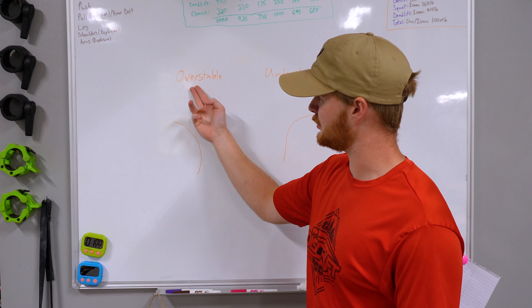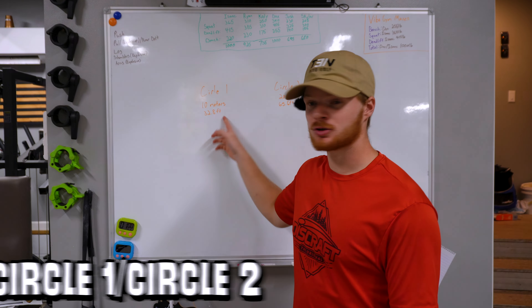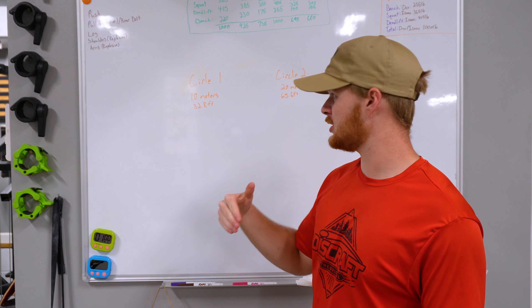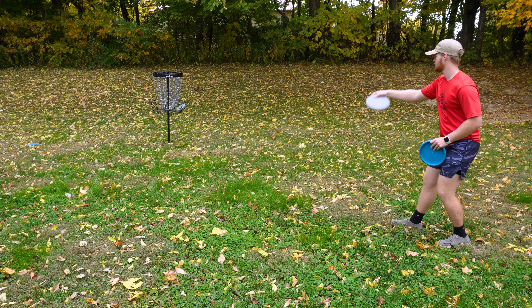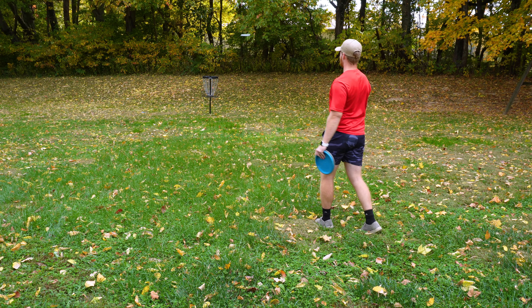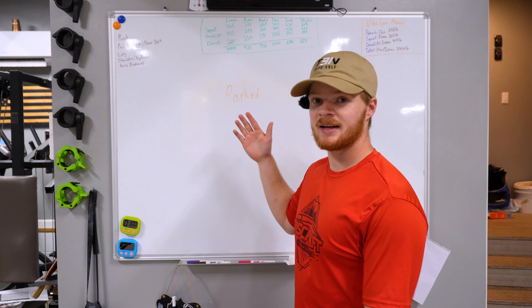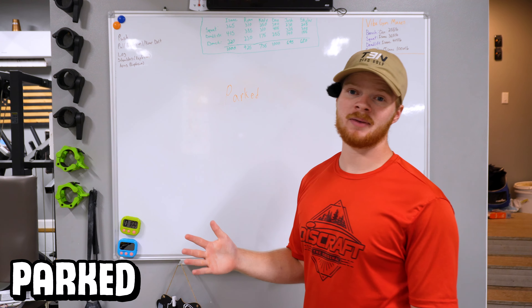Next, we have overstable and understable. Most of this I'm going to be talking about a right hand backhand, so if you're a lefty or throwing forehand, it'll be the opposite. An overstable disc goes more to the left on a right hand backhand, and an understable disc goes more right. An overstable disc is used for flex shots — you throw it on anhyzer and it flexes out because of the overstability. Understable discs are most used for turnover shots where you throw them on anhyzer and they hold that line, or you throw them on hyzer and they flip up to flat, or they turn over if it's a flippy enough disc.